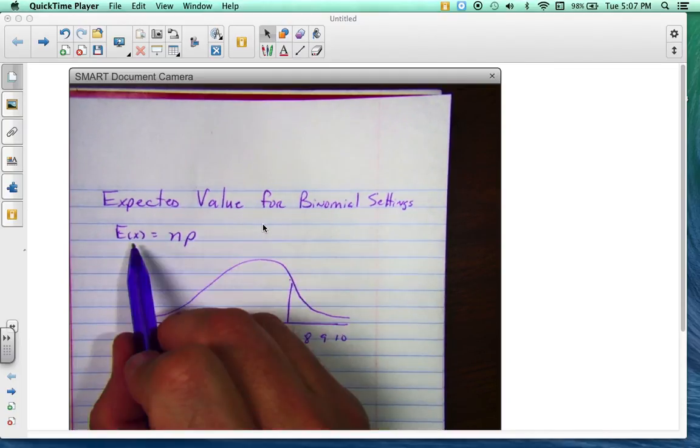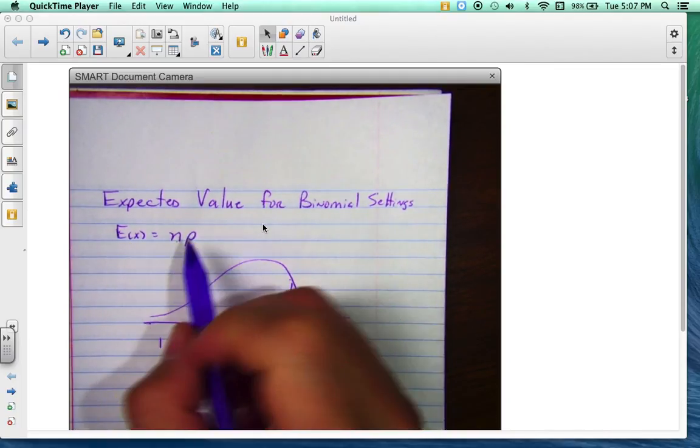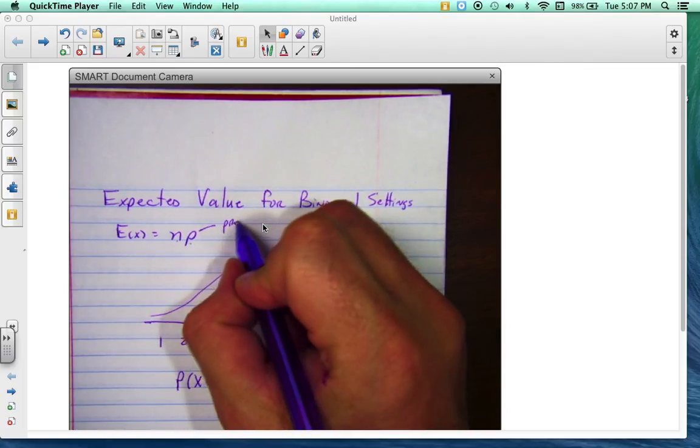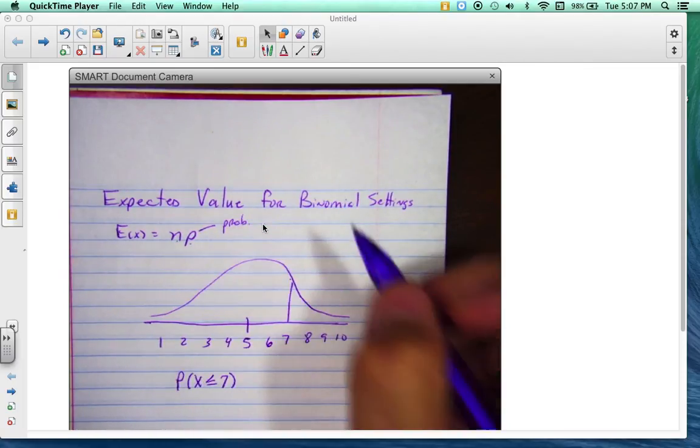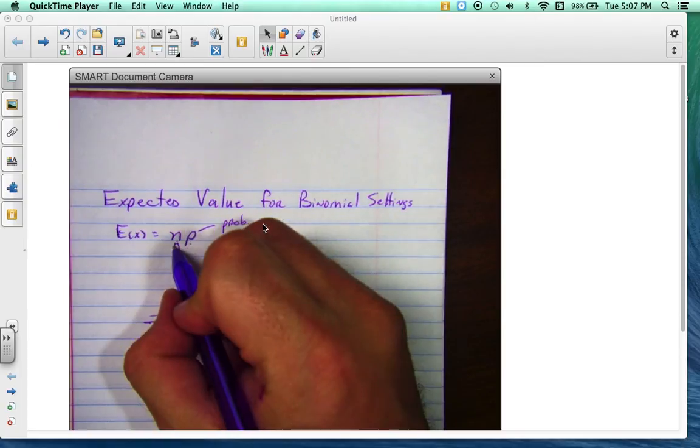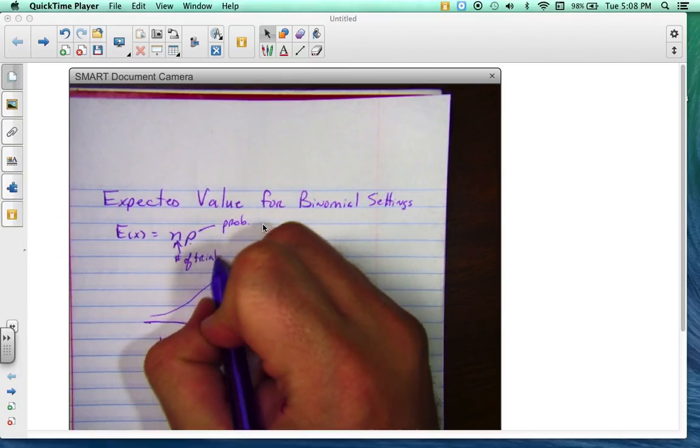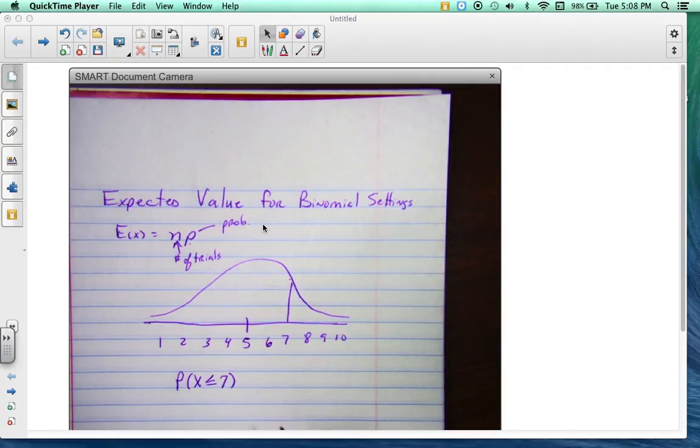When we are looking for the expected value for a binomial setting, you always multiply n times p. Remember, p is your probability, and n is your number of trials. I'm going to go over that in a second.